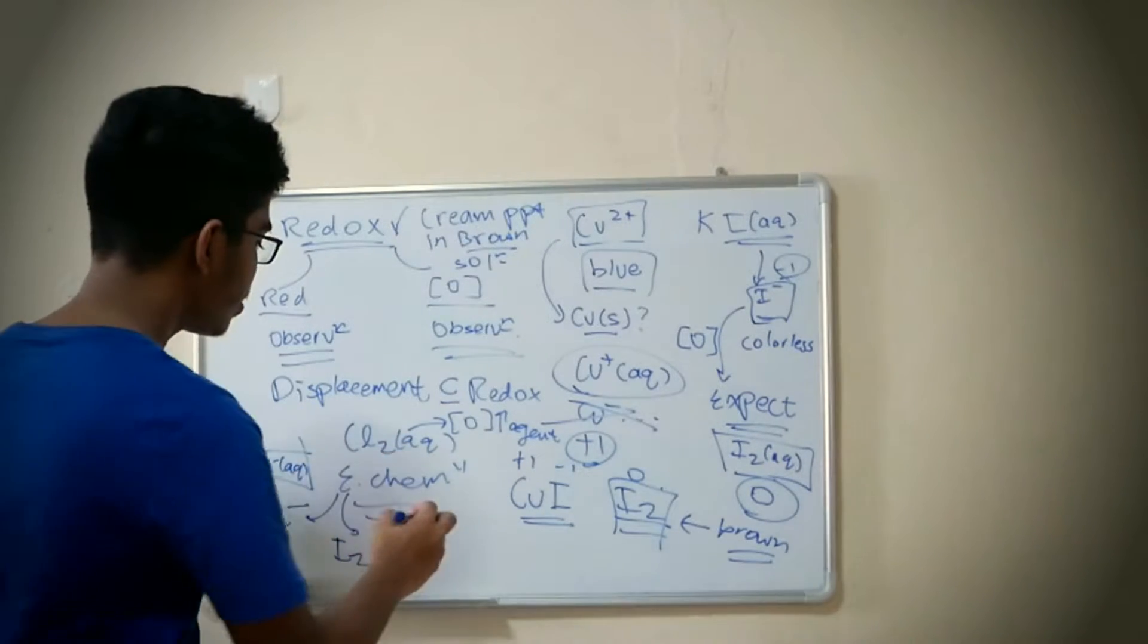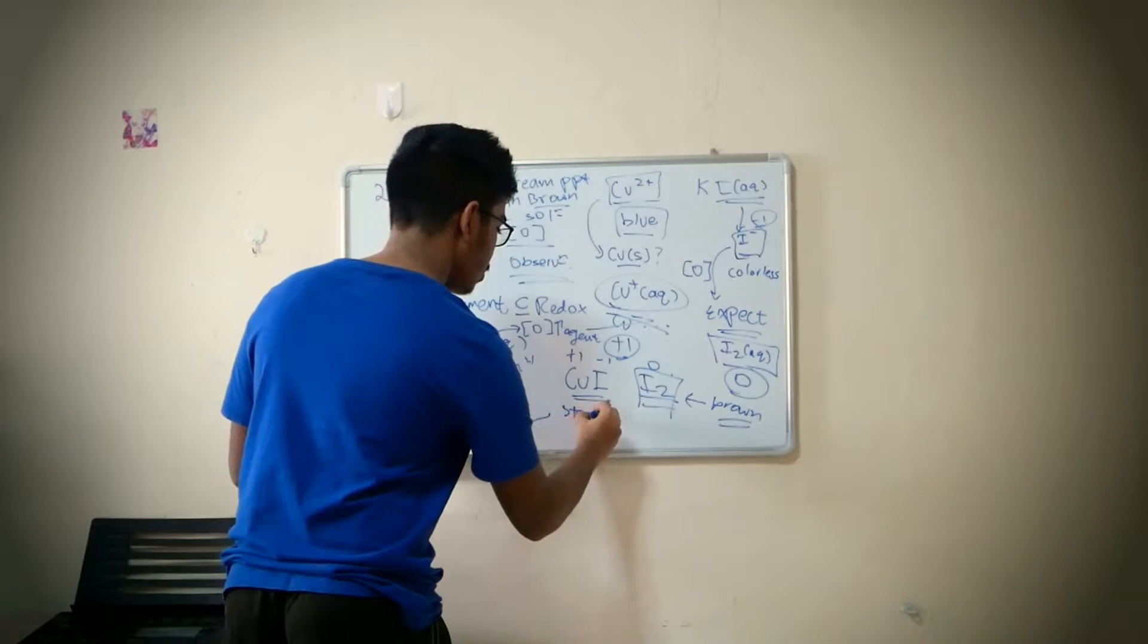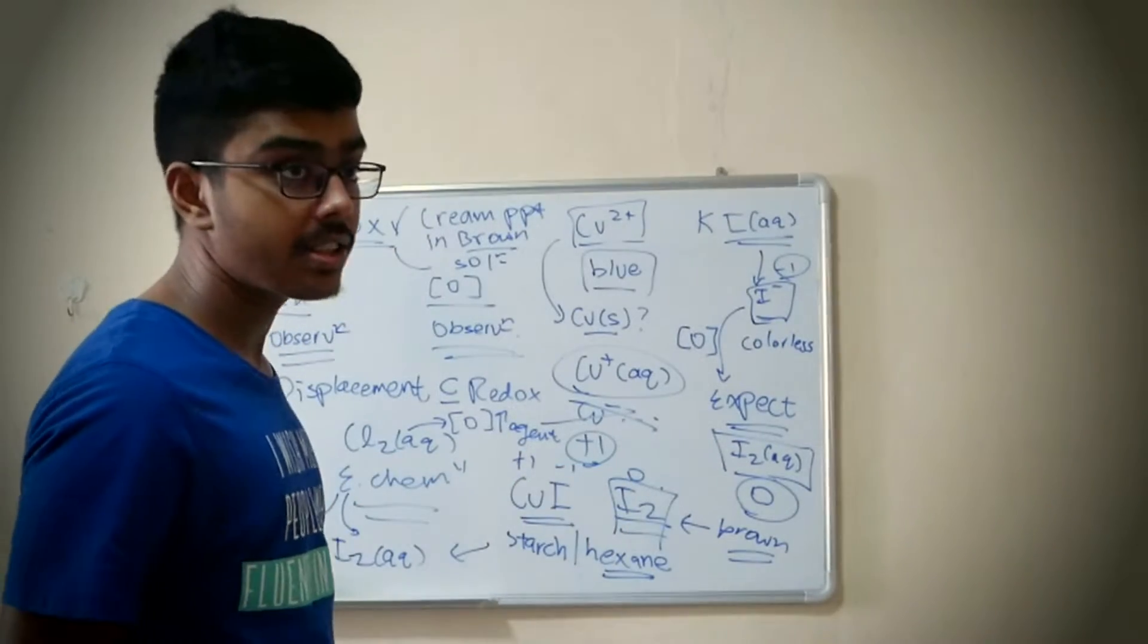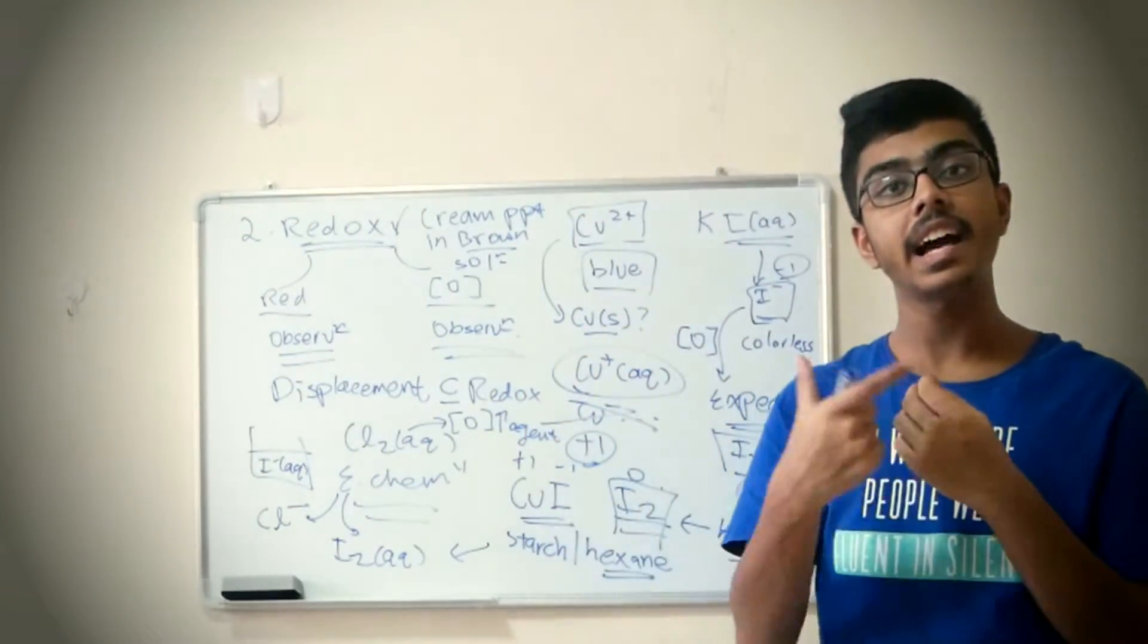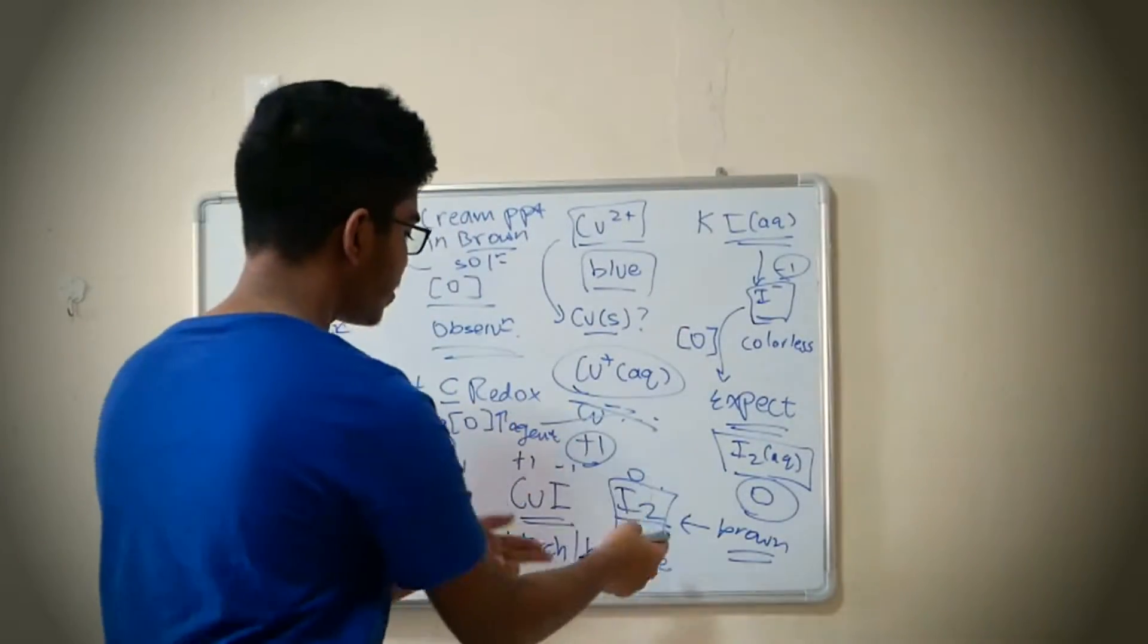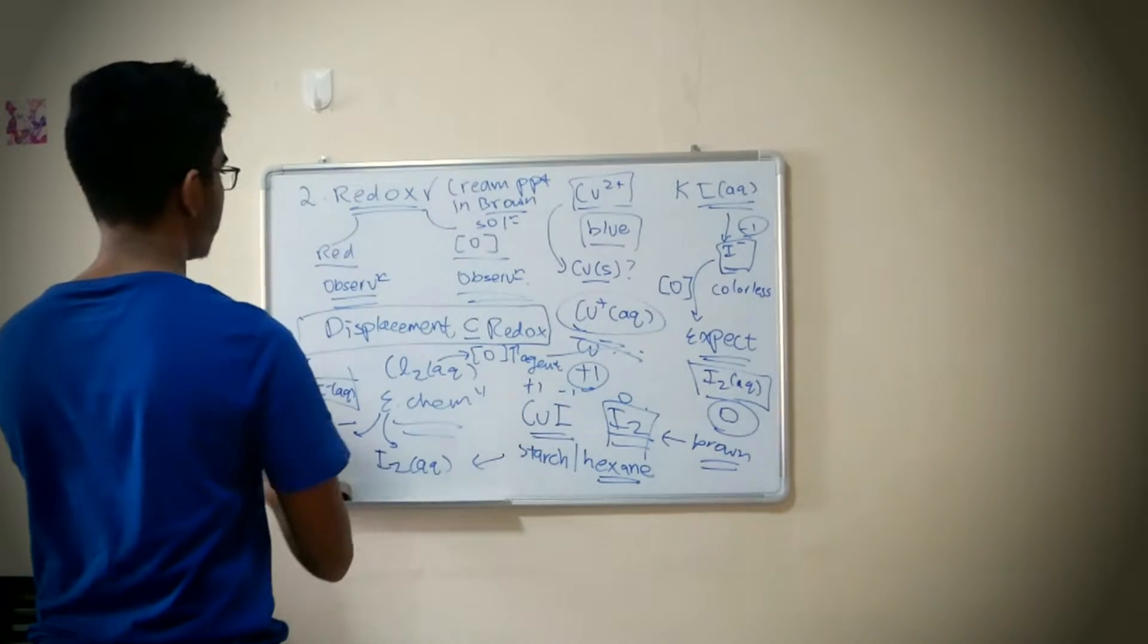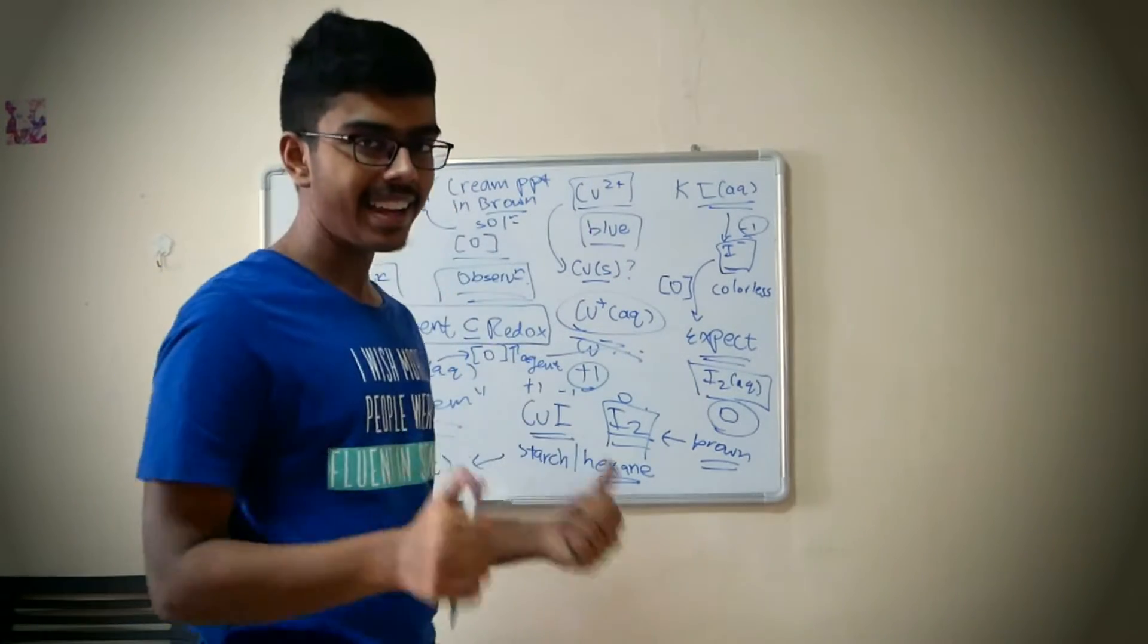So this one would be very yellowish. And it's very hard to distinguish between these two colors. So immediately they will ask you to either put starch or they ask you to add hexane. Hexane is an organic solvent. Since I2, it's a simple molecular structure, it can only form ID-ID interactions. Thus it is able to dissolve in hexane more than it does in water. So you'll be able to see a clear, what color? Brown.